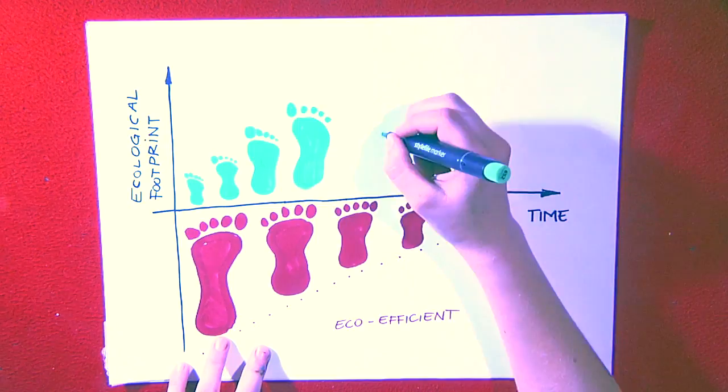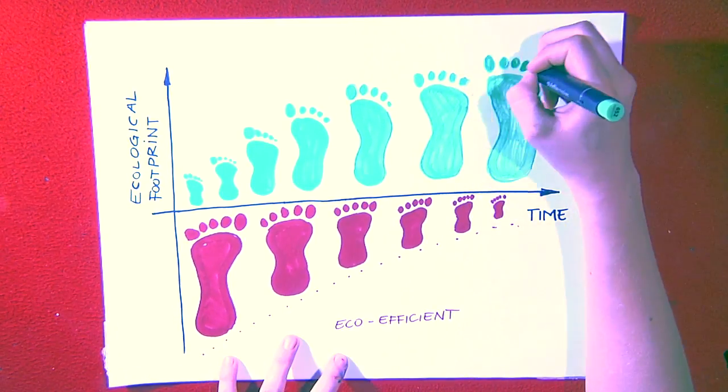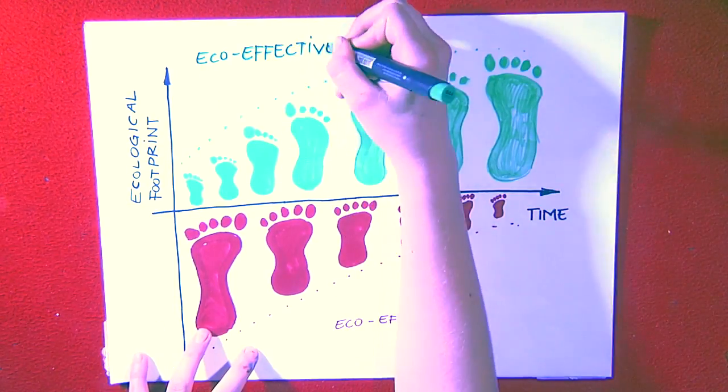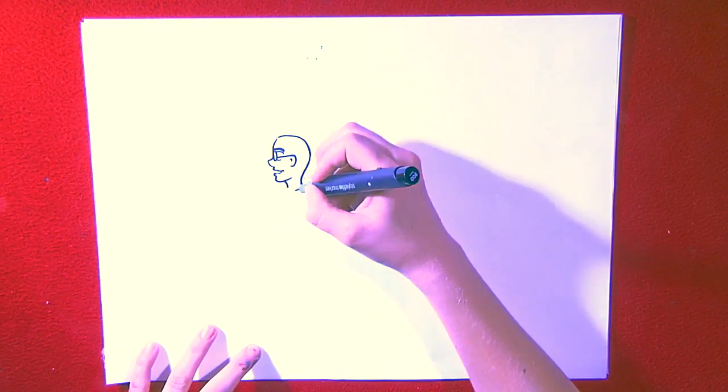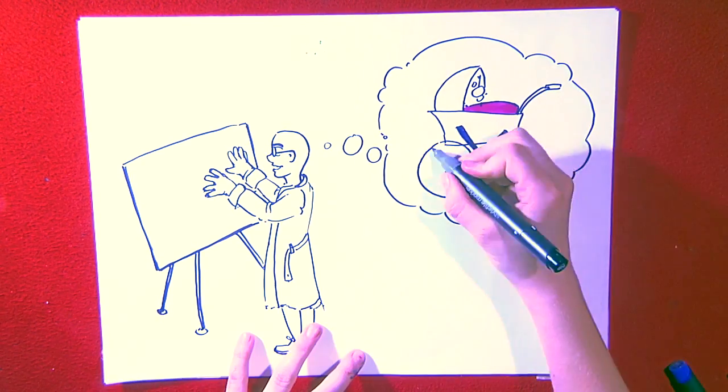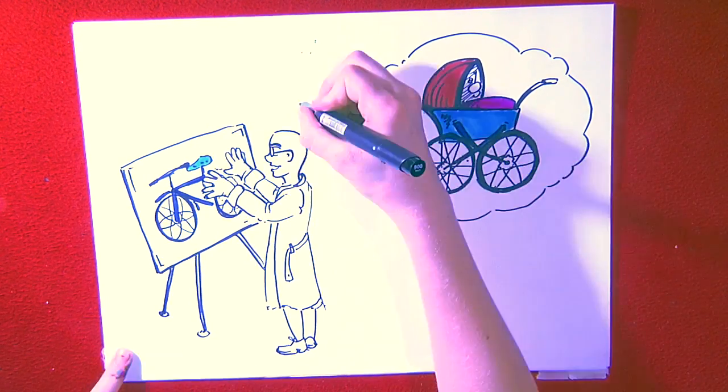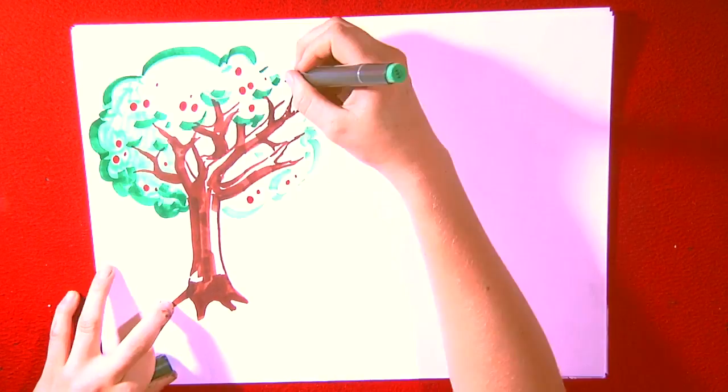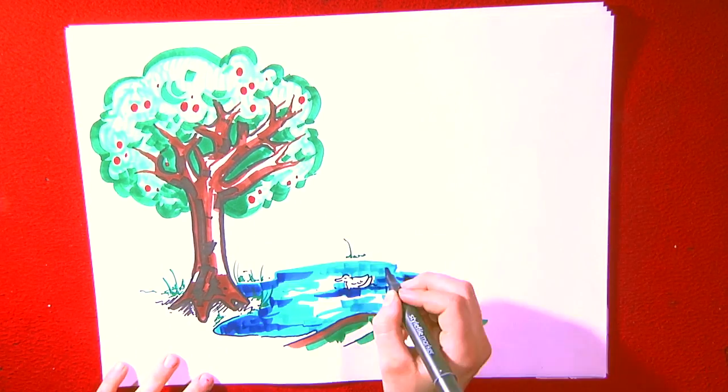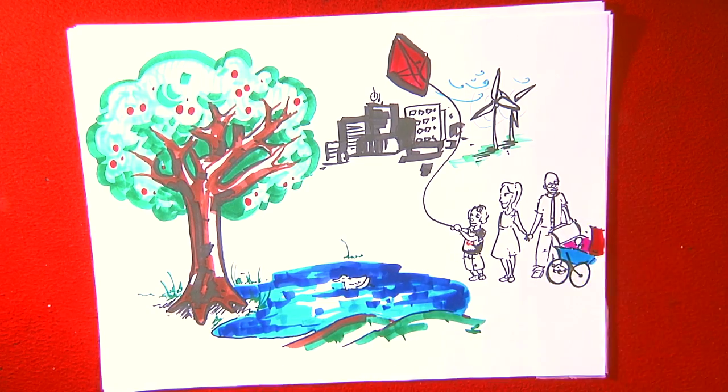With the cradle-to-cradle approach, we can not only reduce our negative ecological footprint but extend our positive footprint. That means, already while designing a new product, we have to be aware of the fate of all of its components at the end of a product's life cycle. In the long term, we would then be able to live in harmony with nature again, without lowering our standard of living.